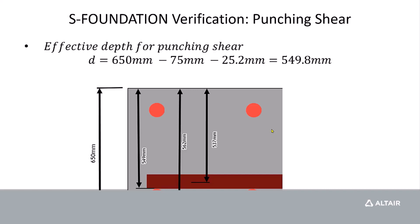Now for punching shear, we're going to actually take the average depth of the rebar. So you can see here we have two layers, we have the x and y, and they have different effective depths. But when we average it out, it equals 549.8 millimeters. So we're going to keep that value in mind while we go through the other calculations.